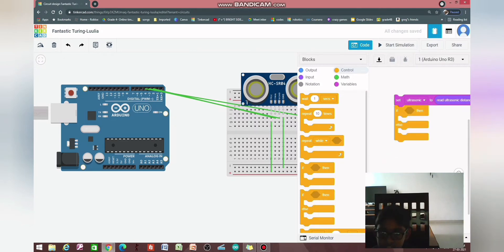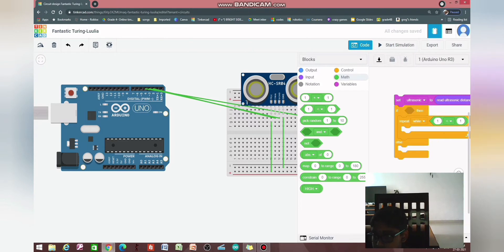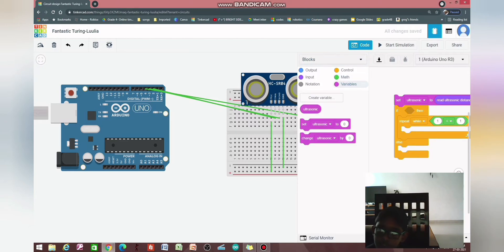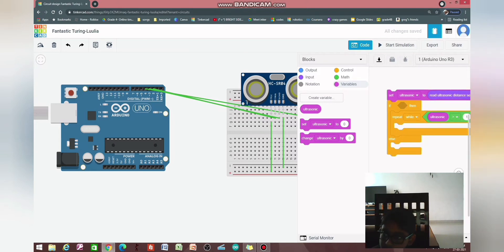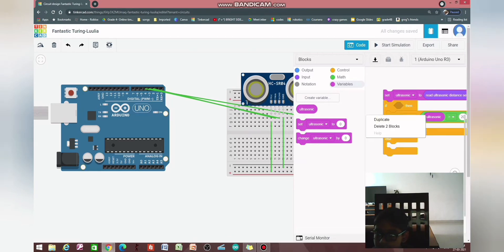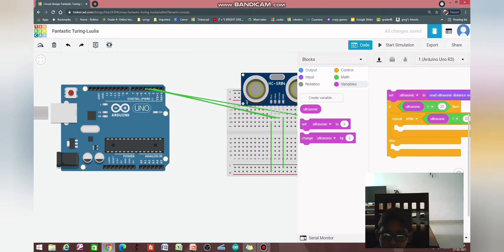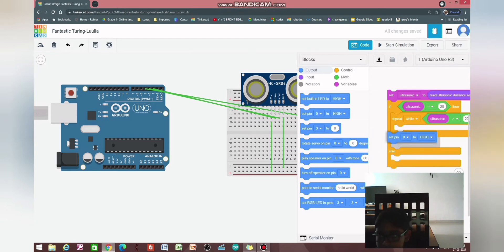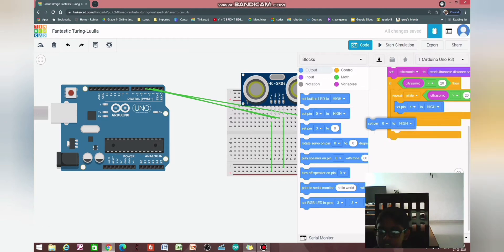And then, trigger pin, pin 2, as well as the echo pin, pin 3. If you need to change this to inches, you can. But since I use it as centimeters, let it be. Then, if then else, and repeat while math, click this block here. And then, if ultrasonic, ultrasonic is less than, let's say, 20 centimeters.